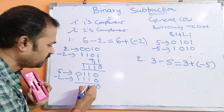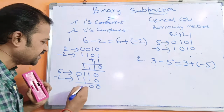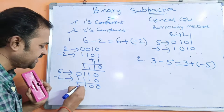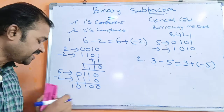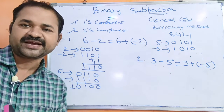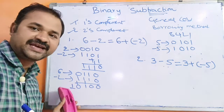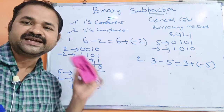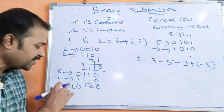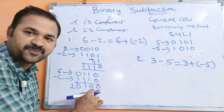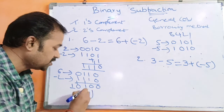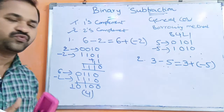0 plus 0 is 0. 1 plus 1 is 0 with carry 1. 1 plus 1 plus 1 is 1 with carry 1. Here we got a carry. In two's complement notation, if we get any carry, it specifies a positive number — simply ignore the carry. In decimal 8, 4, 2, 1 notation, the result is 4. So 6 minus 2 equals 4.